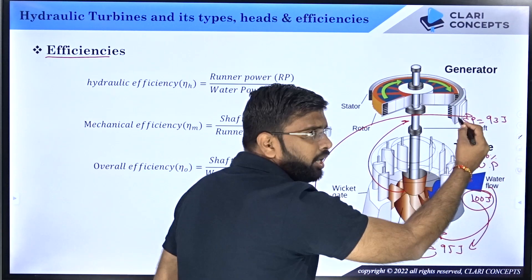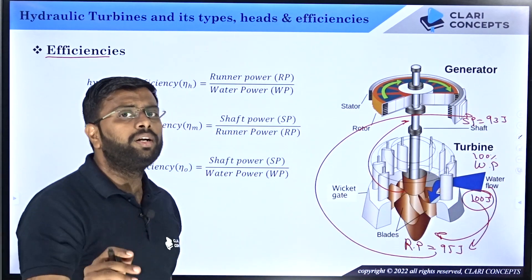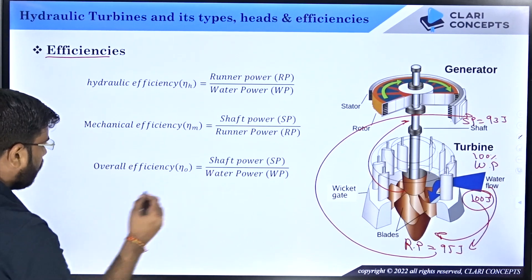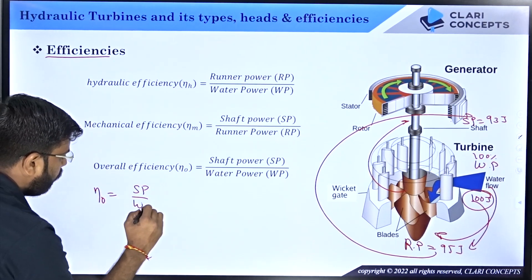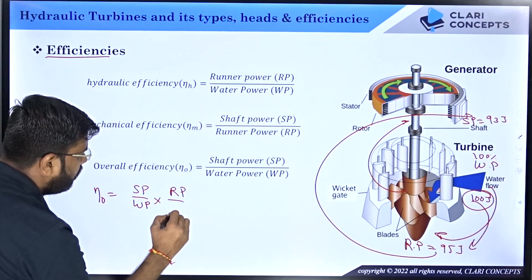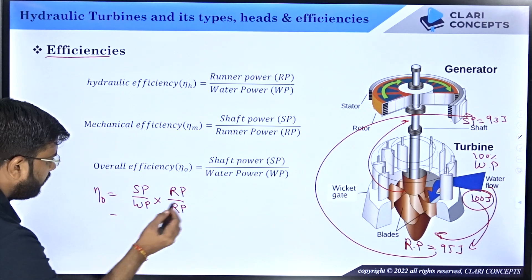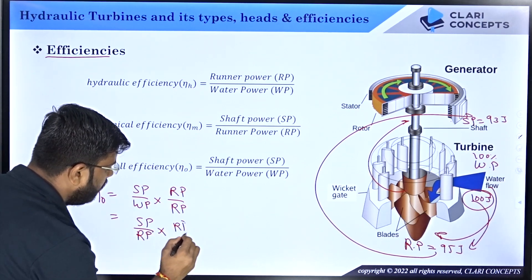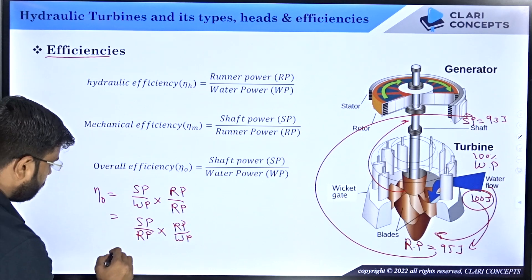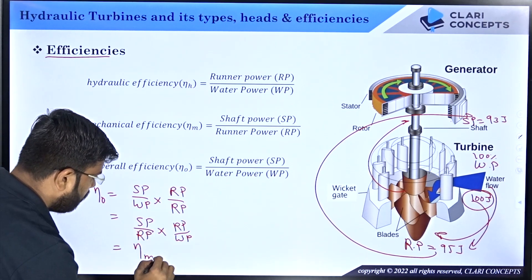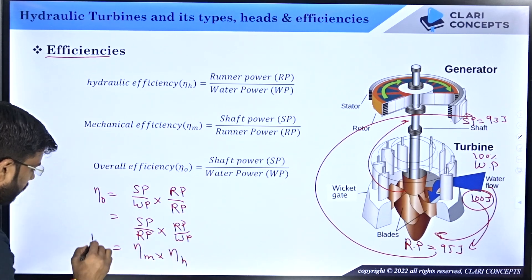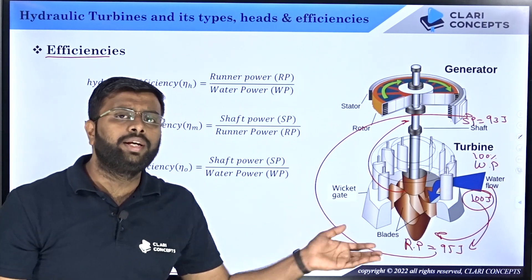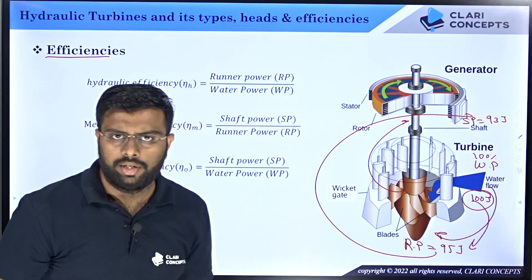The overall efficiency covers the whole process: 100 joules of water power yielding 93 joules of shaft power gives 93% overall efficiency. Overall efficiency eta_O equals shaft power divided by water power. We can elaborate: eta_O equals shaft power by water power, and by multiplying runner power in both numerator and denominator, after cancellation we get — shaft power by runner power times runner power by water power — which is mechanical efficiency times hydraulic efficiency. So overall efficiency is the product of both efficiencies.